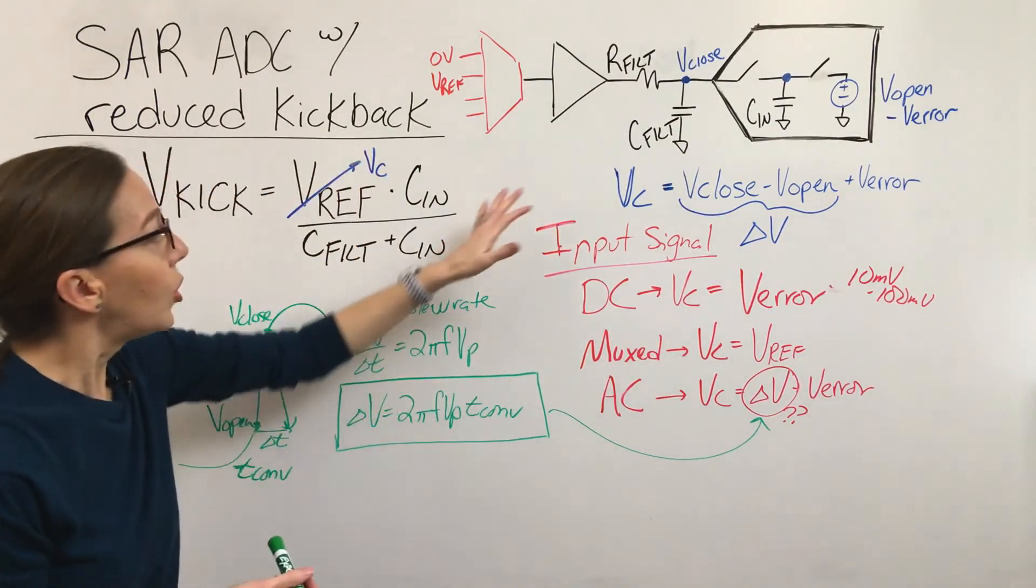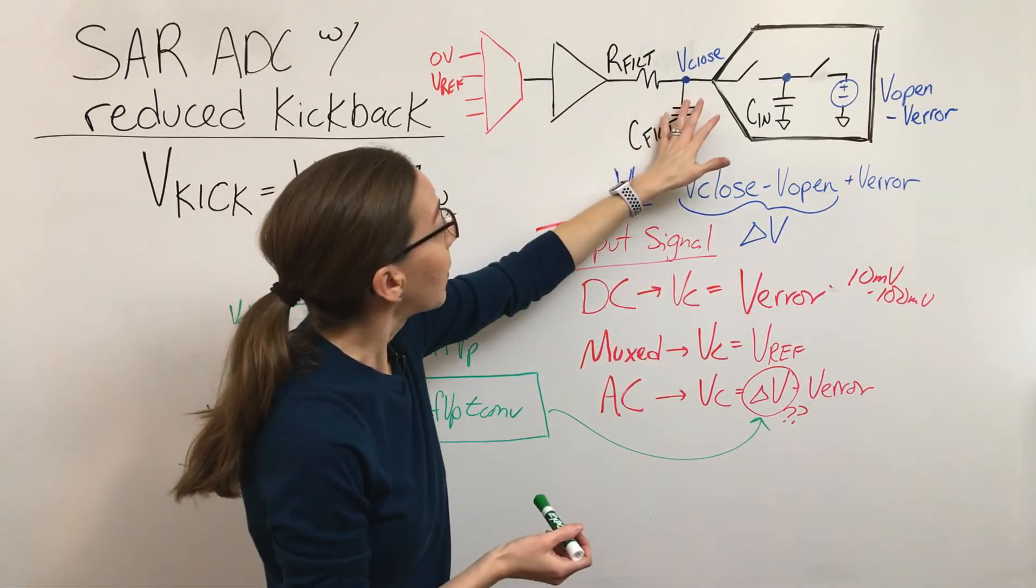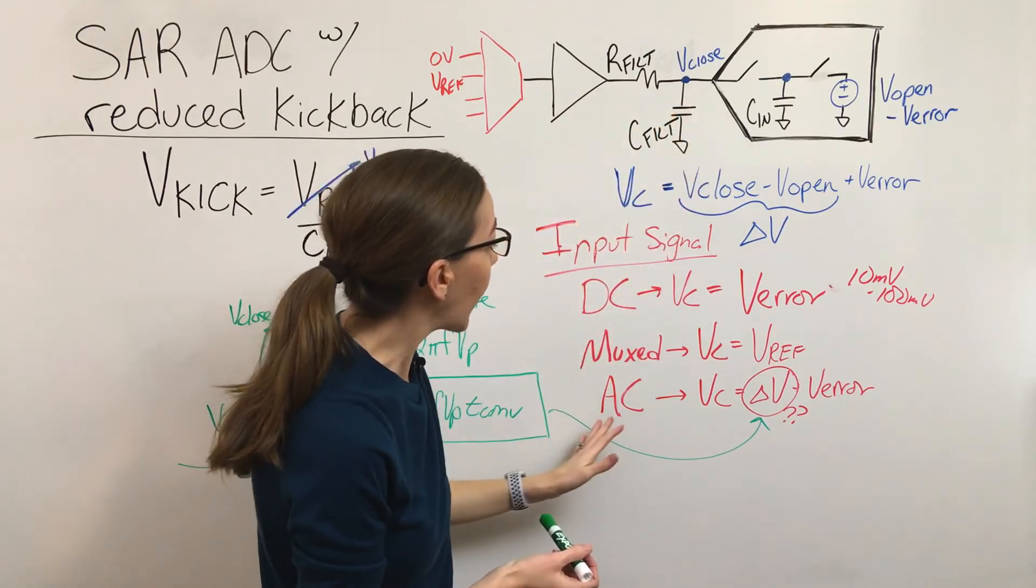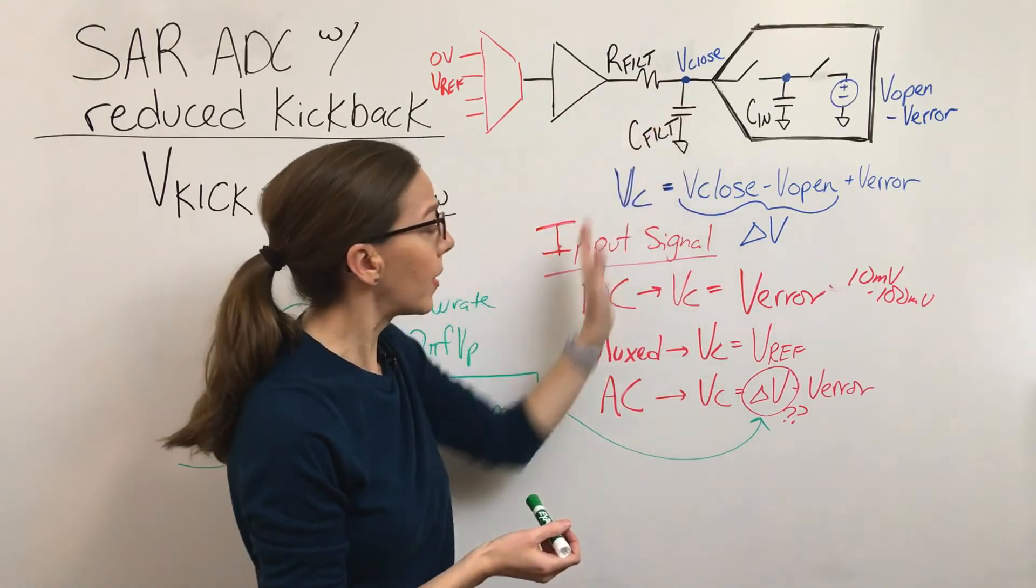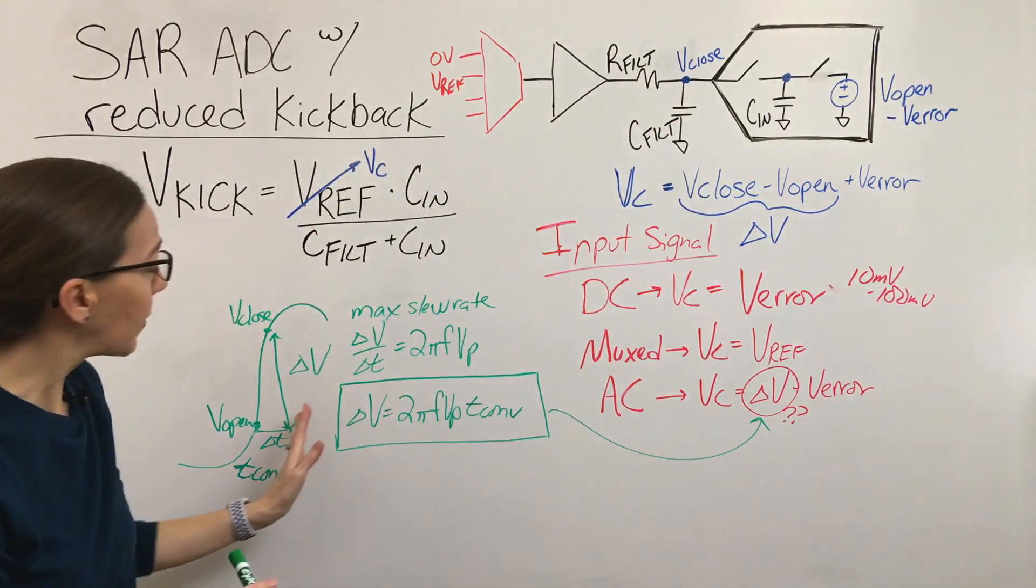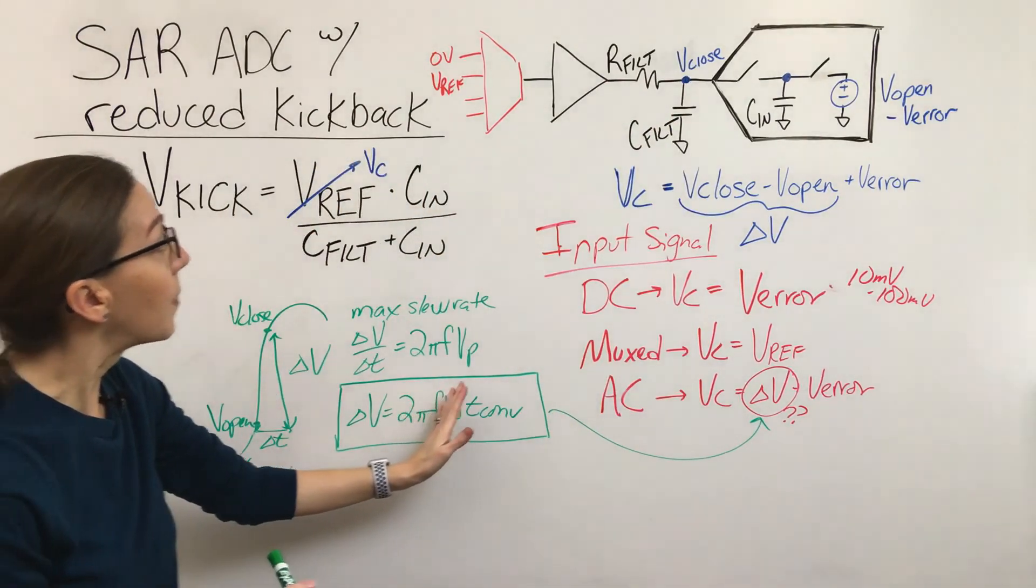For a mux case, you would have to widen the bandwidth out because your kickback is going to be a lot bigger. And then for AC cases, it's going to be dependent on the frequency or the bandwidth of your signal coming in.